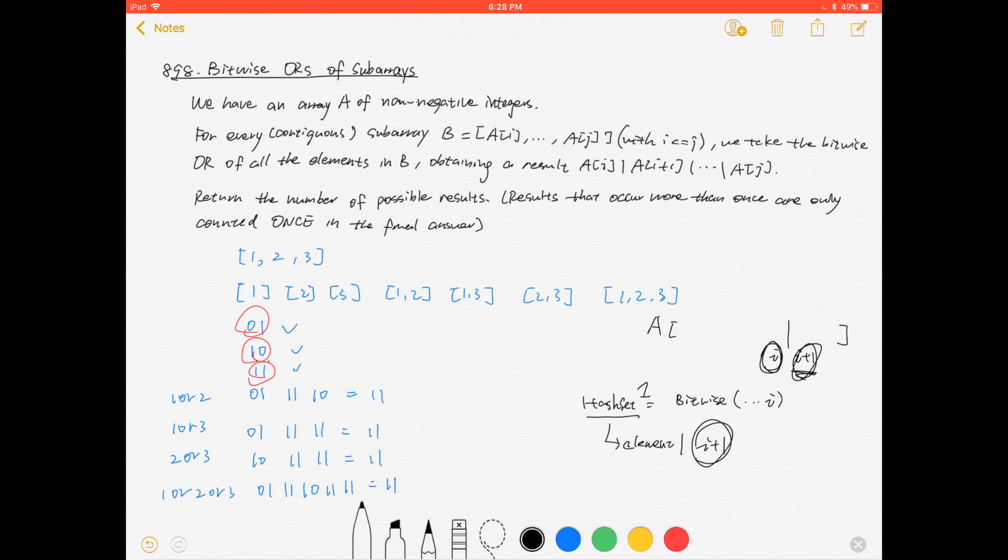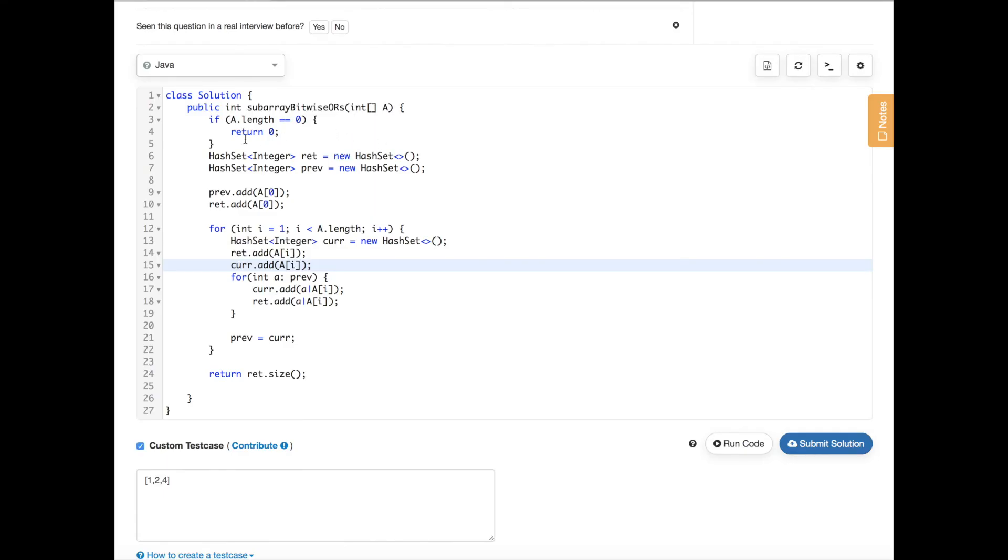Now let's see the code. This block is me just checking whether it's an edge case where we don't have anything in the array, so we just return zero.